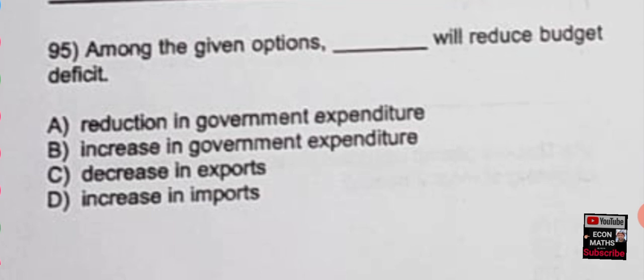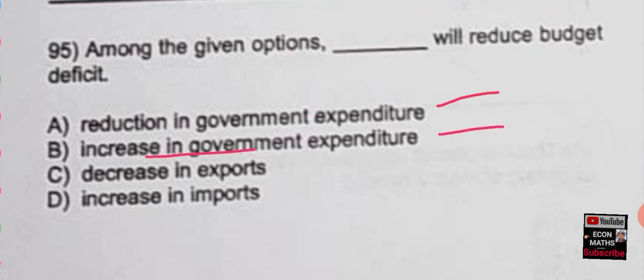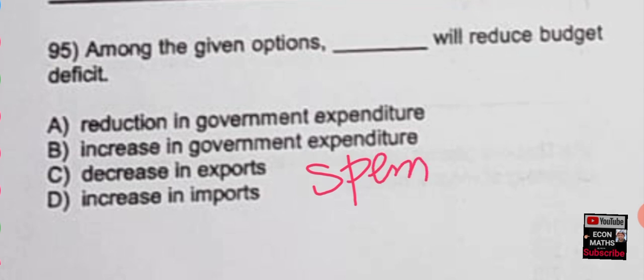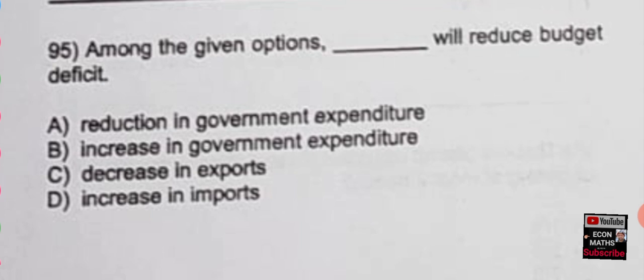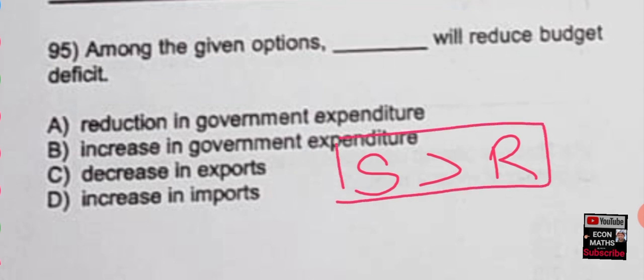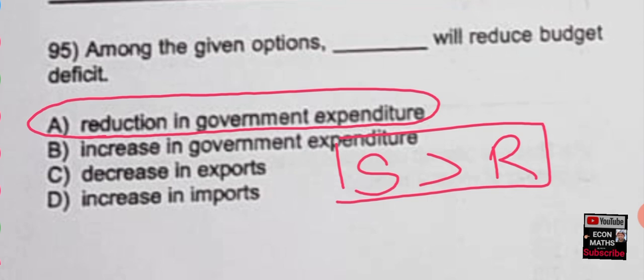The next question: which of the given options will reduce budget deficit? The options are reduction in government expenditure, increase in government expenditure, decrease in exports, or increase in imports. Budget deficit means when government spends more than it collects in revenue. To correct it, we reduce government expenditure. The correct option is option A — reduction in government expenditure will reduce budget deficit.